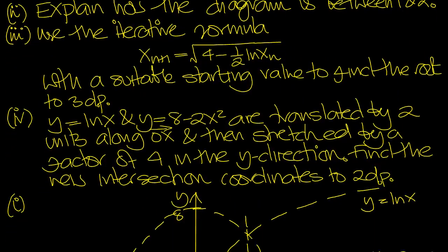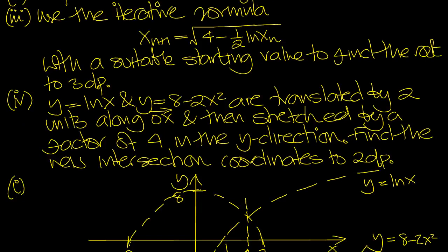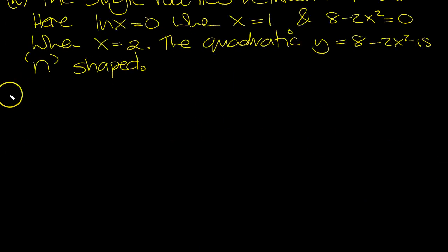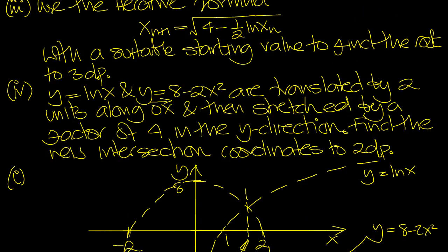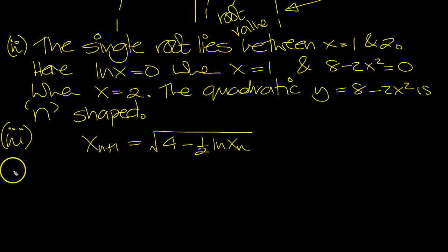Part three: use the iterative formula. x_{n+1} = √(4 - ½ln x_n). Let's check: 4 minus ½ ln x_n. We'll start with x_0 = 1.5.